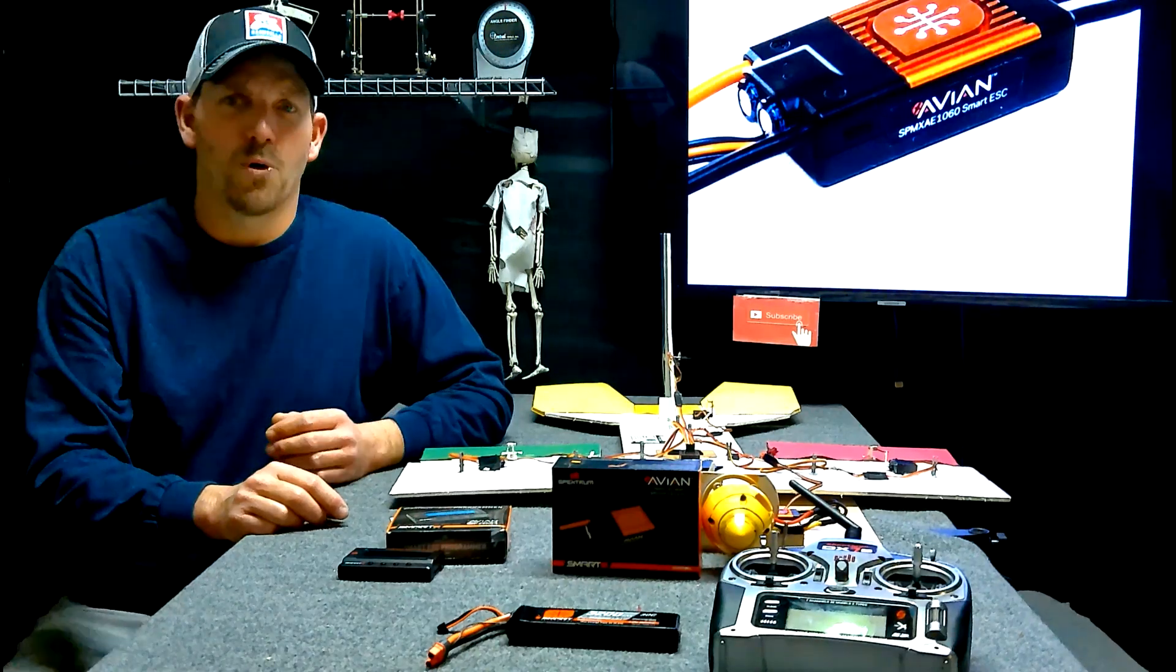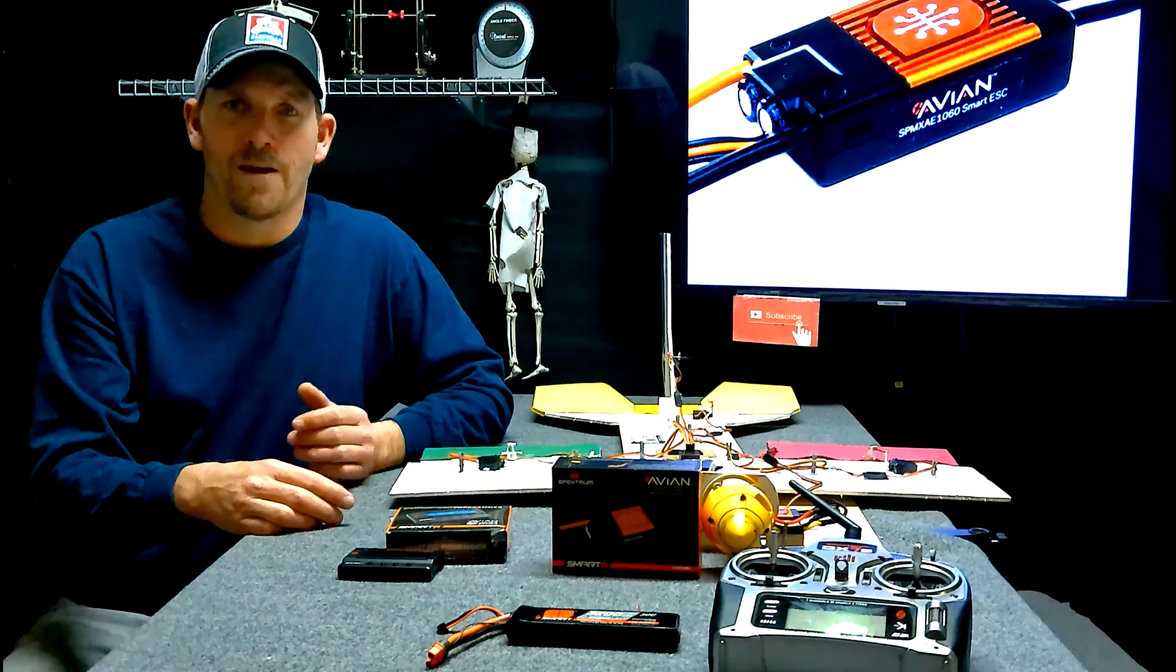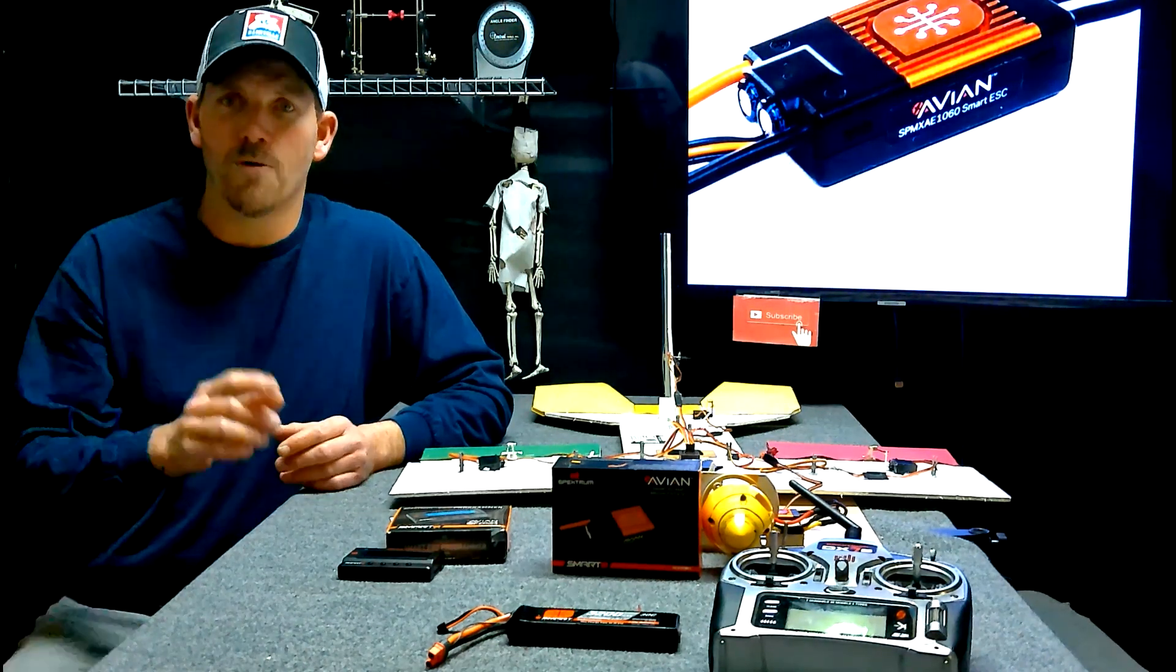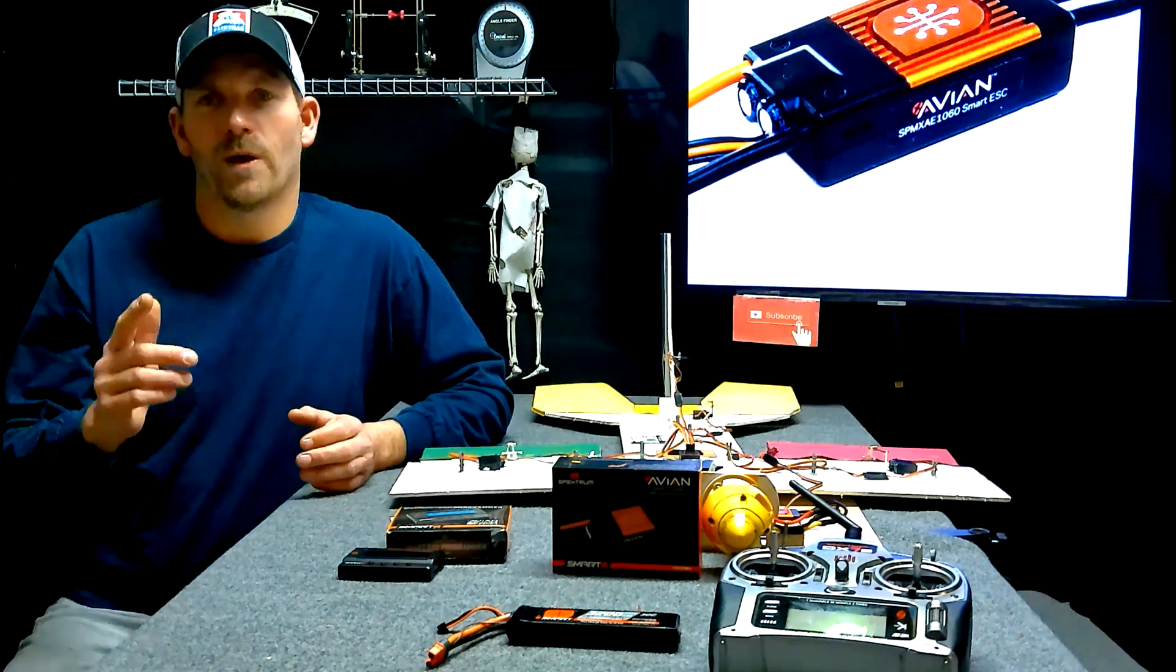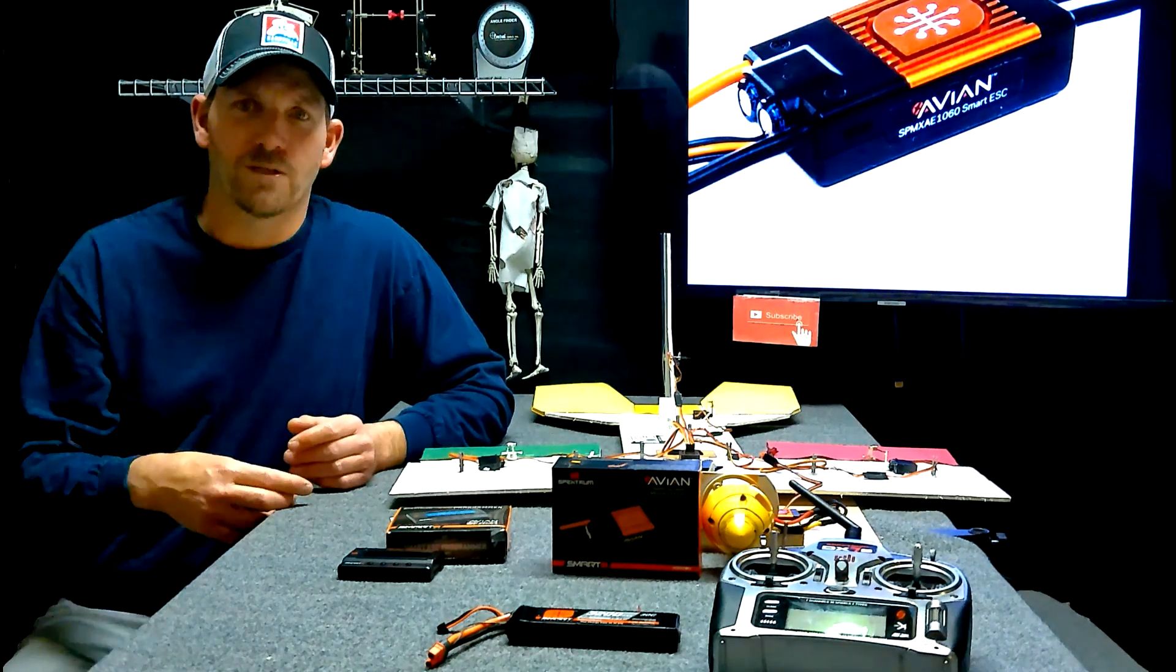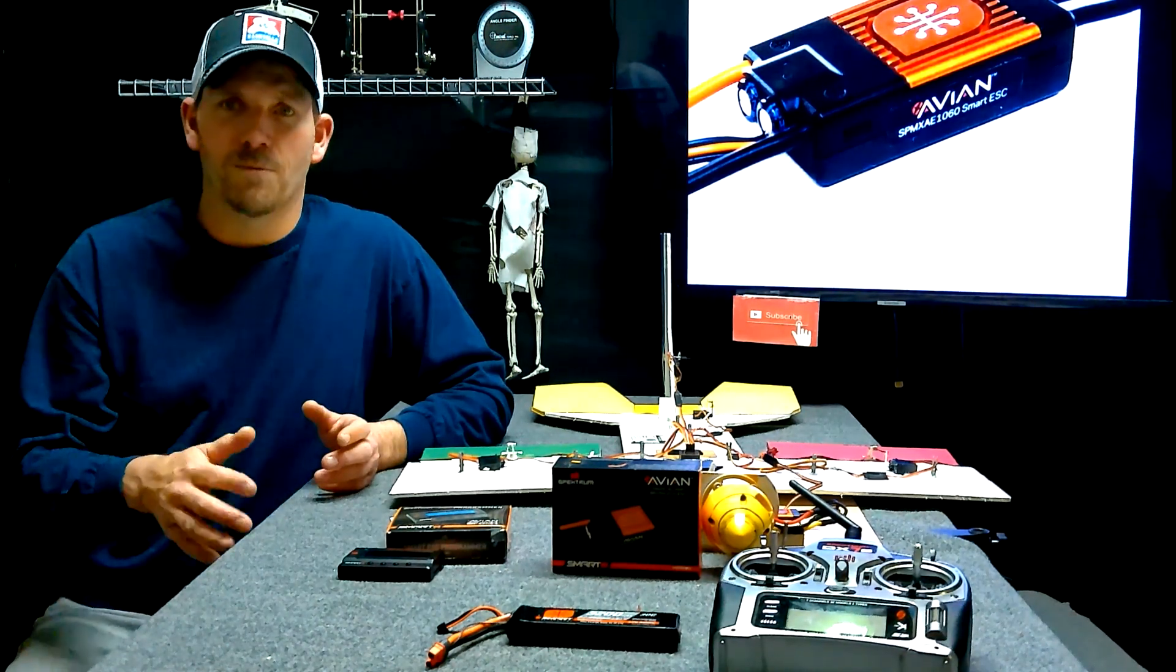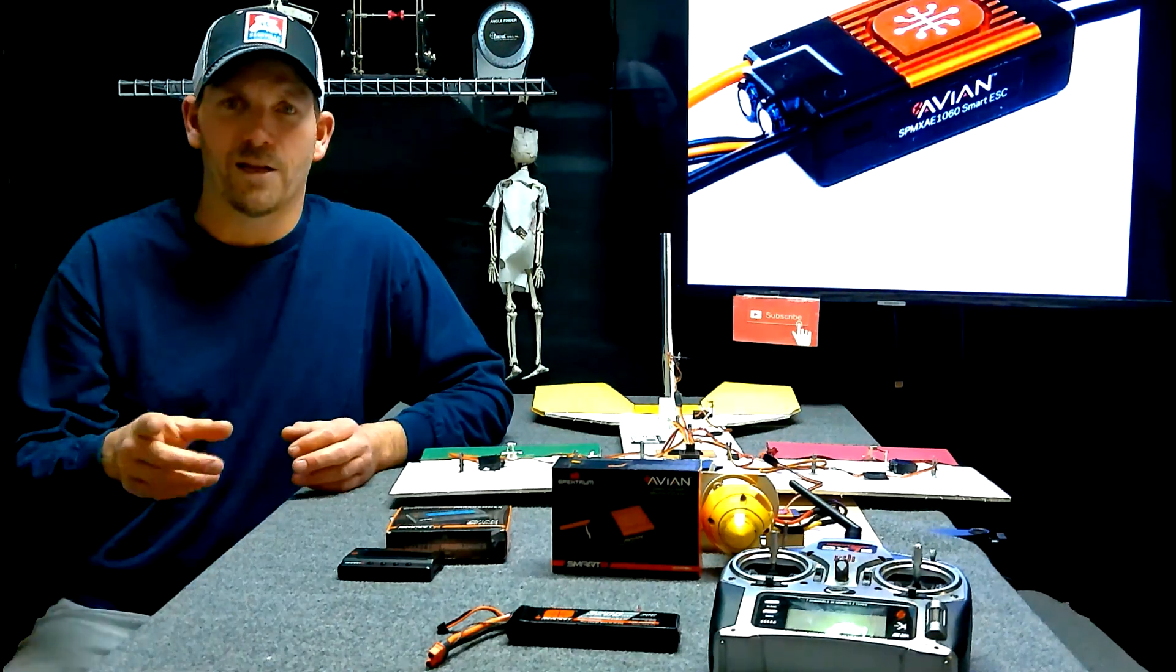You can also program the speed control directly from the screen of a transmitter. However, you need to have a generation 2 and newer transmitter, which is the black transmitters and newer. It will have to be updated to the latest firmware. You will have to be connected to a smart receiver, bound to a smart receiver. Then your speed control is plugged into it. And everything needs to be updated. Then directly from the screen of your transmitter you can program your ESC.